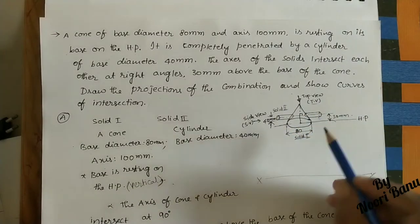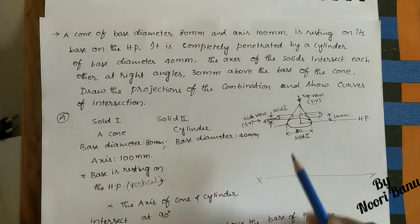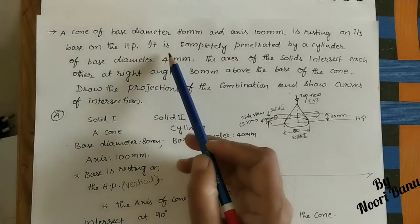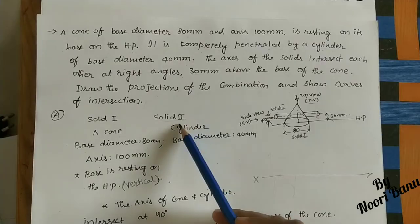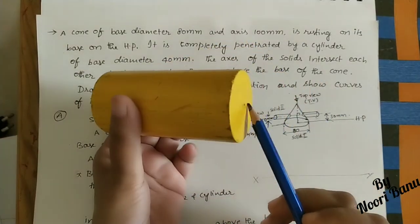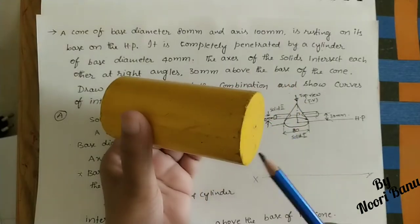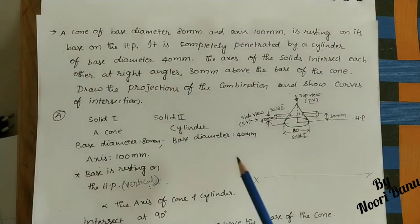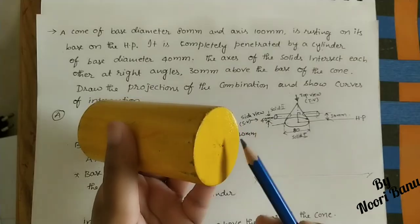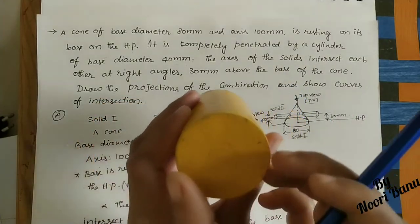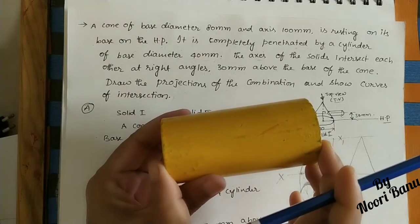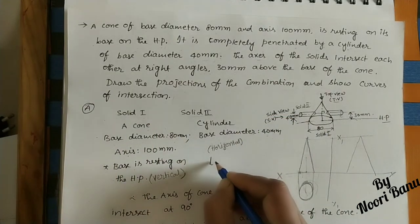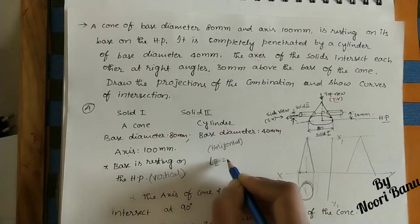Roughly, solid one has its base on the horizontal plane; the base diameter is 80 mm and height is 100 mm. Solid one is completely penetrated by a cylinder, which is solid two. The cylinder has two circular faces and a base diameter of 40 mm.